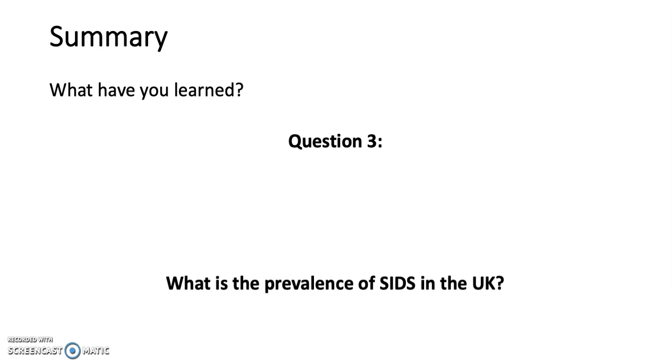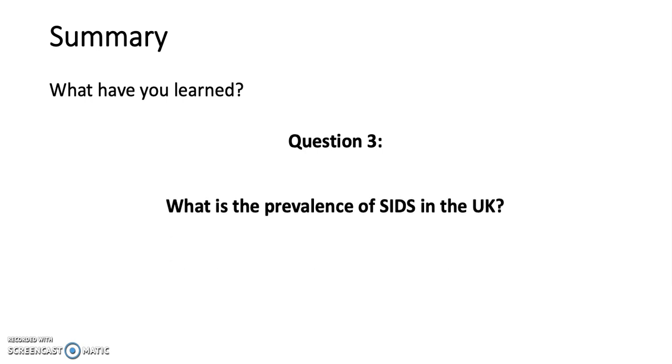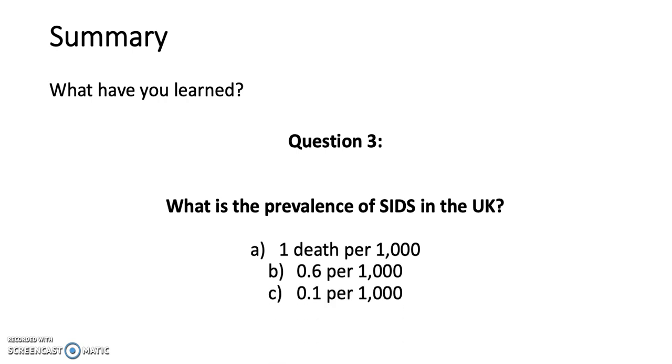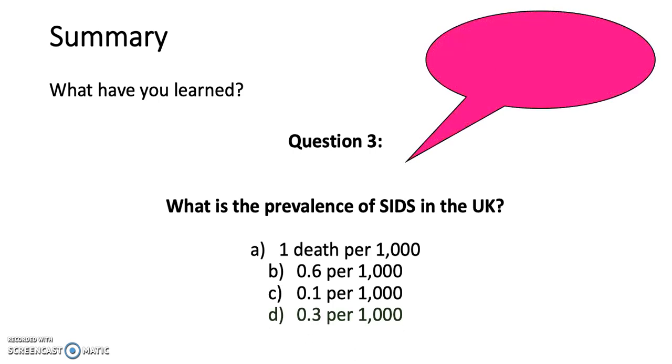Question 3 — What is the prevalence of SIDS in the United Kingdom? The answer is 0.3 per thousand. Thank you everyone, that comes to the end of the slideshow. I hope you found it useful. Please come back to Crash Course Medicine for more revision material. Bye!